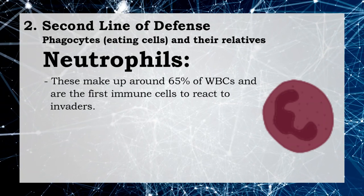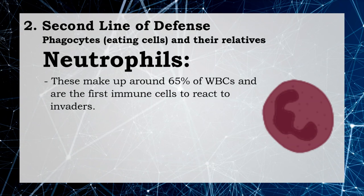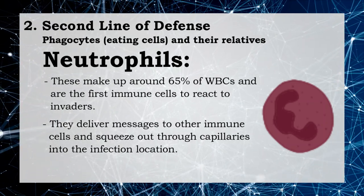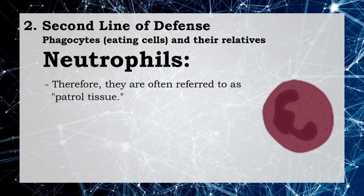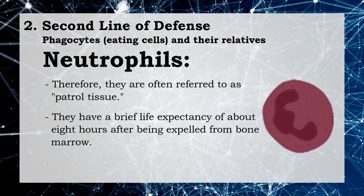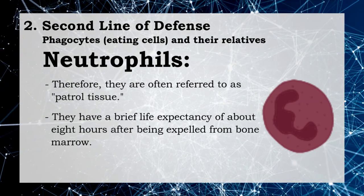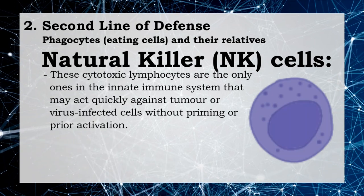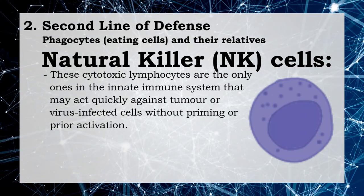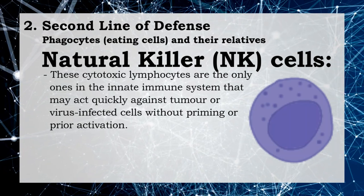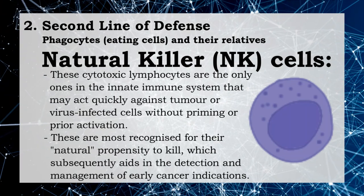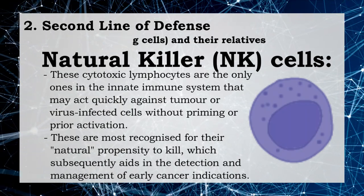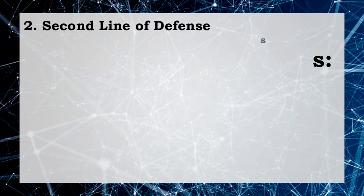Neutrophils make up around 65 percent of white blood cells and are the first immune cells to react to invaders. They deliver messages to other immune cells and squeeze through capillaries into the infection location; they are often referred to as patrol tissue cells. They have a brief life expectancy of about eight hours after being expelled from bone marrow. Natural killer cells are cytotoxic lymphocytes that are the only ones in the innate immune system that may react quickly against tumor or virus-infected cells without prior activation. They are most recognized for their natural capacity to kill, which aids in the detection and management of early cancer indications.